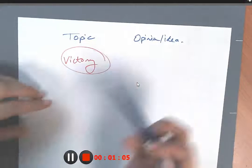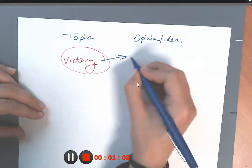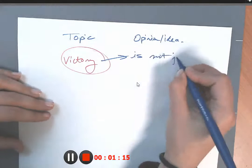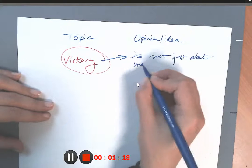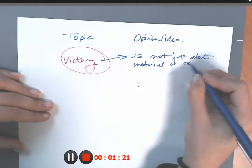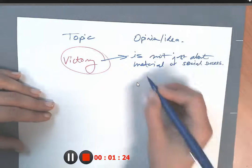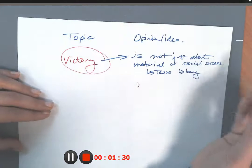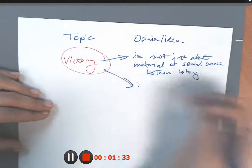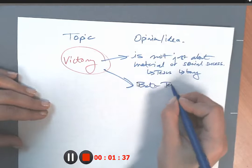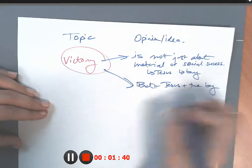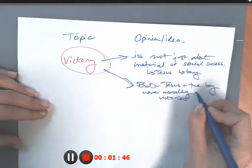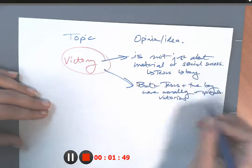And here's what I'm thinking out loud. Okay, victory is not just about material or social success. Because, you know, like for example, Jesus was not a social or material success. And the boy wasn't a social or material success, but he was victorious, right? And how was he victorious? You know, both Jesus and the boy were morally victorious, morally or spiritually victorious.